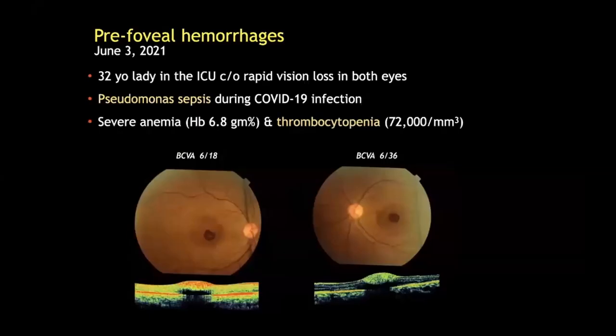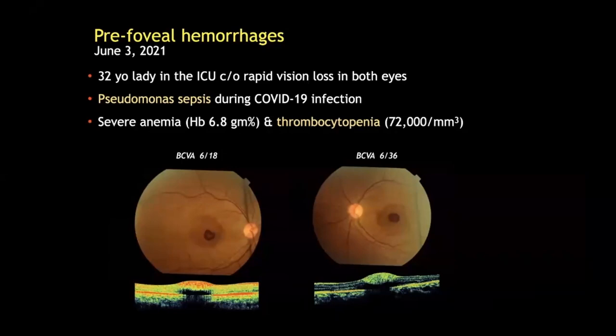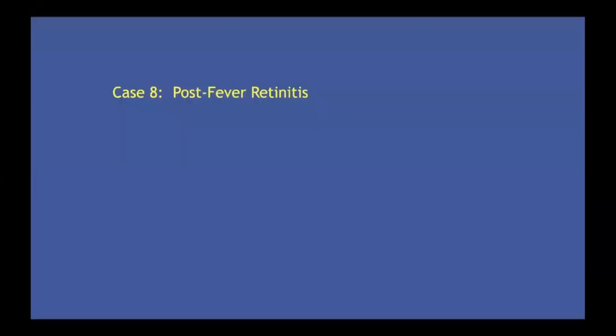In June this year there was a 32-year-old lady who complained of sudden deterioration of vision in both eyes due to pre-foveal hemorrhages. She had Pseudomonas sepsis that she contracted during a COVID infection, and at this time she had severe thrombocytopenia. Eight weeks from onset the pre-foveal hemorrhages had resolved completely with visual improvement.